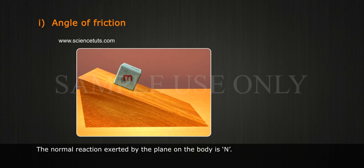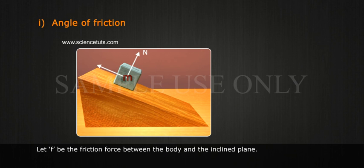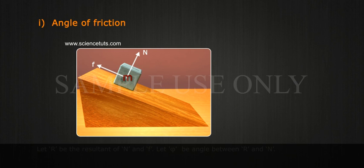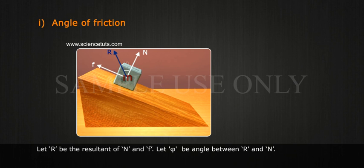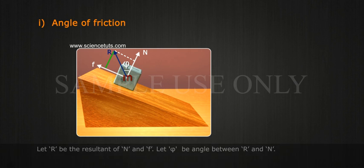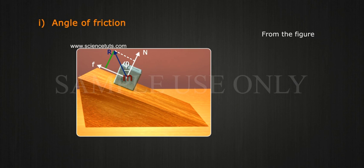The normal reaction exerted by the plane on the body is N. Let F be the friction force between the body and the inclined plane, and let R be the resultant of N and F. Let phi be the angle between R and N. From the figure, tan phi is equal to F divided by N, which is equal to mu S.